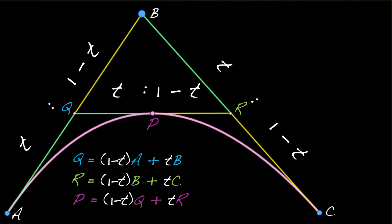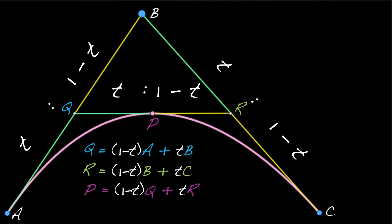From this last equation, it kind of looks like P is degree 1 in T, but the first two equations also depend on T, so let's substitute the first two equations into the third to get this combined expression.